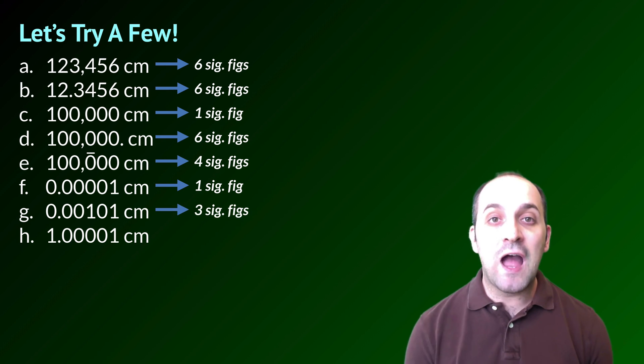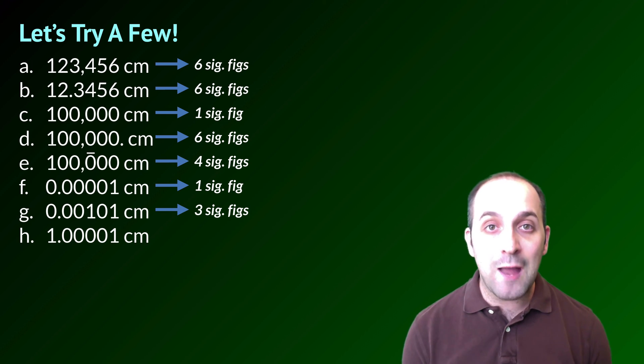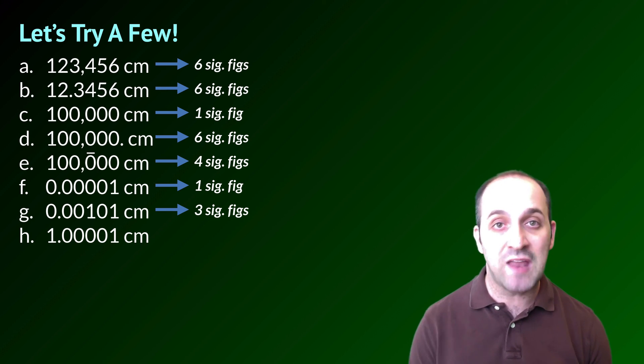In G, we've got three significant figures. The one and the zero and the one are all significant. That zero would not be there if we did not know it with certainty, and certainly we have enough certainty in this measurement to even know that the one that comes after that zero is still significant.